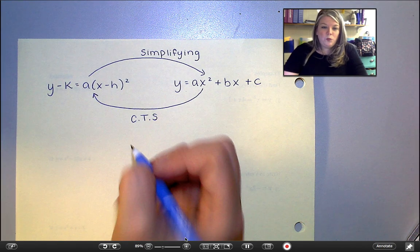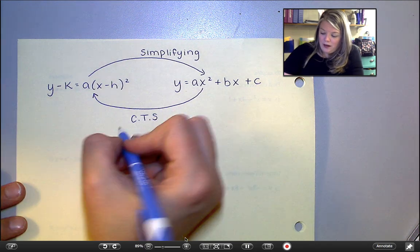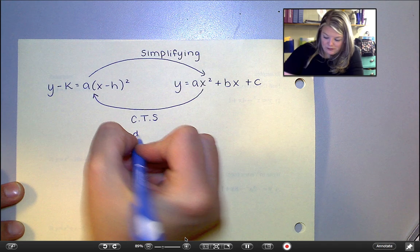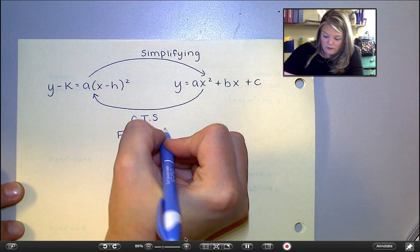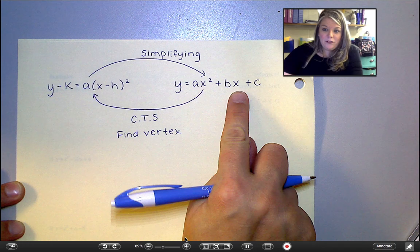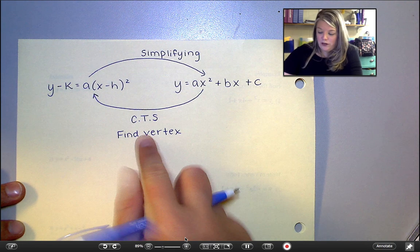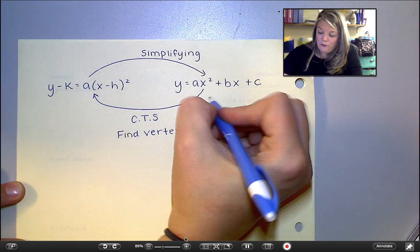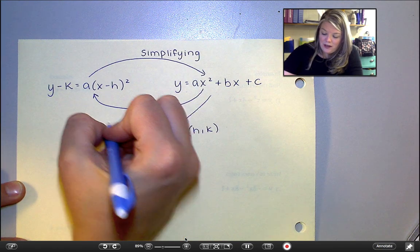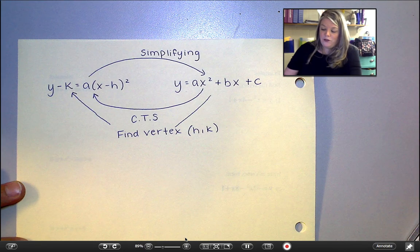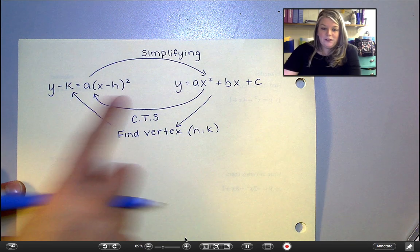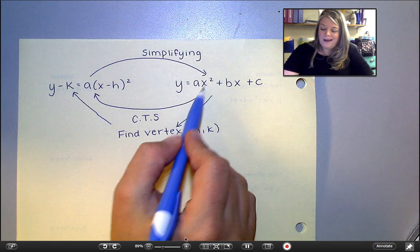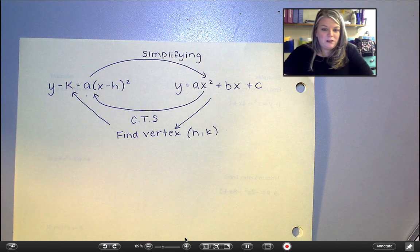Or we can do kind of a workaround also. And for the workaround, we can find what the vertex is. So from this form, there is a way that we can figure out where the vertex would be located. We can find the values of h and k. And then if we can find the values of h and k, we can plug those back into the vertex form formula to get our equation in vertex form. So completing the square kind of goes straight from one to the other. And again, that's what we're going to do in class tomorrow.